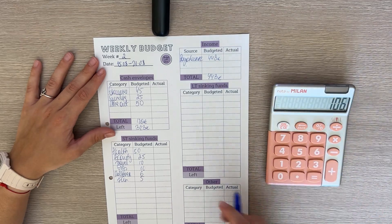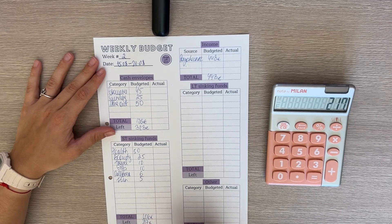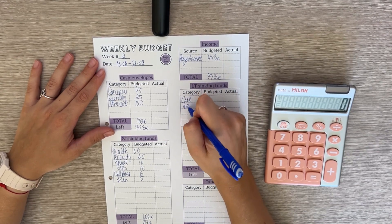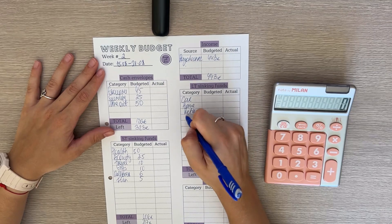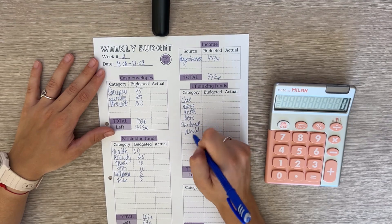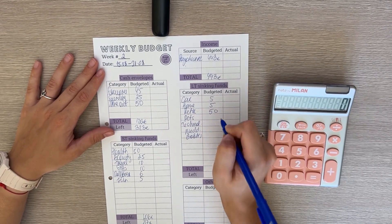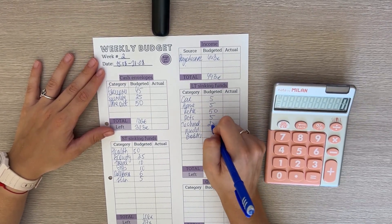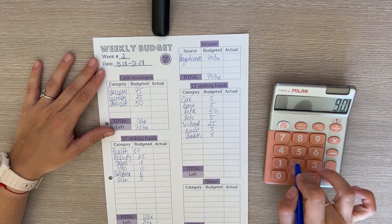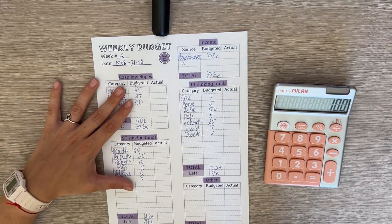So long-term sinking funds: we have car, home, retirement, pets, technology, weddings and babies. Car and home each is going to get 5, retirement is going to get 50, pets is going to get 5, technology 25, and weddings and babies each 5. So in total that's 100 euros, which means we have 117 left to budget.